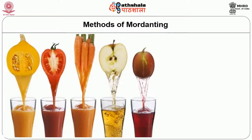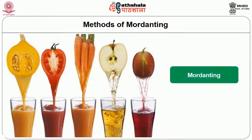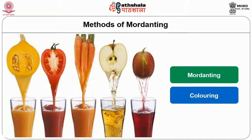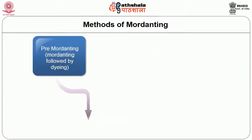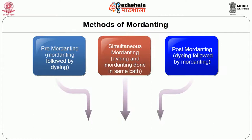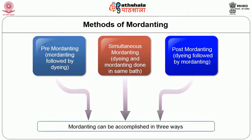We have learnt about the types of mordants. Now let us see the various methods of mordanting. There are two processes concerned with the dyeing of vegetable colours: the first is mordanting and the second is colouring. Mordanting is a treatment which prepares a material to be dyed to receive the dye. Mordanting can be accomplished in three ways: pre-mordanting, i.e. mordanting followed by dyeing; simultaneous mordanting, i.e. dyeing and mordanting done in the same bath; and post-mordanting, i.e. dyeing followed by mordanting.